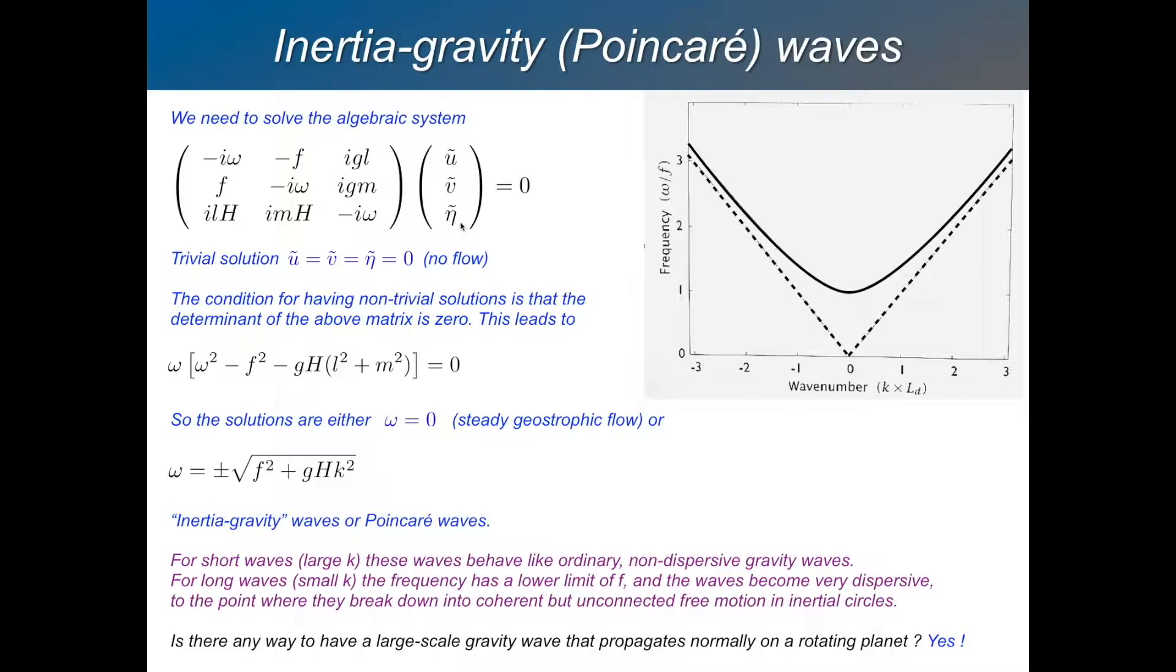What we want to see is what happens when there's a wave solution. So what that means is we want to see what happens when these three amplitudes are non-zero. Because this equation here, this matrix equation is trivially satisfied if there's no wave solutions. So if U tilde, V tilde, and E tilde are all zero, it doesn't matter what's in here, it's going to be satisfied.